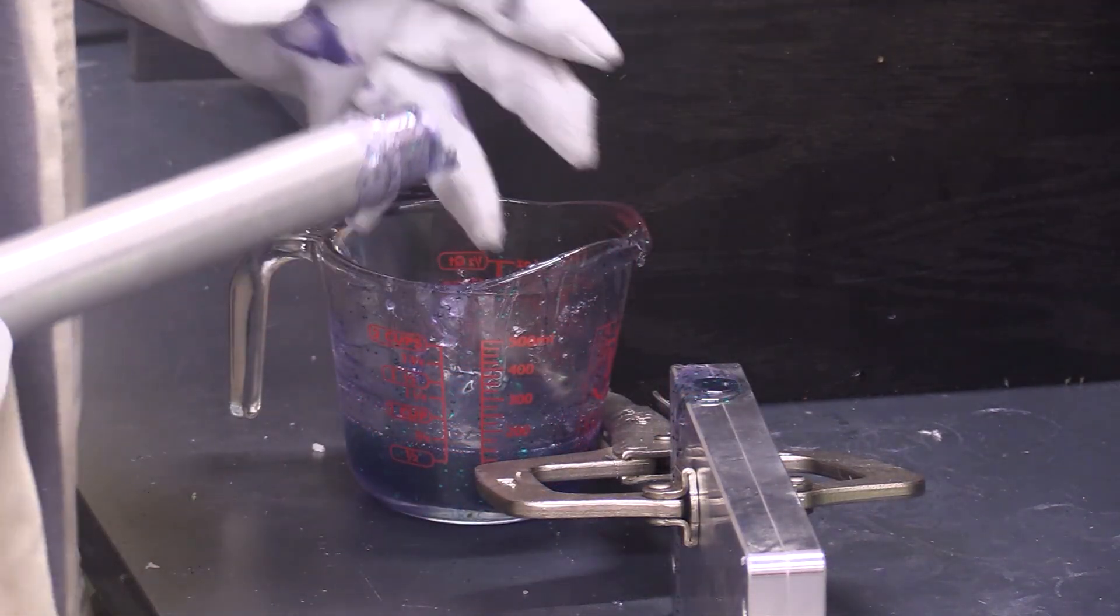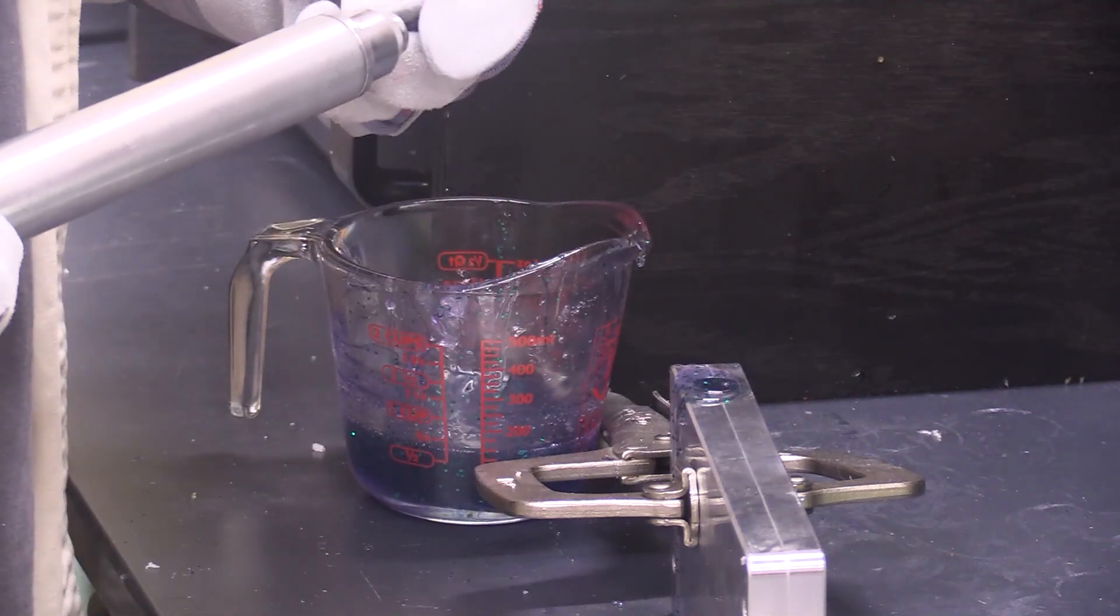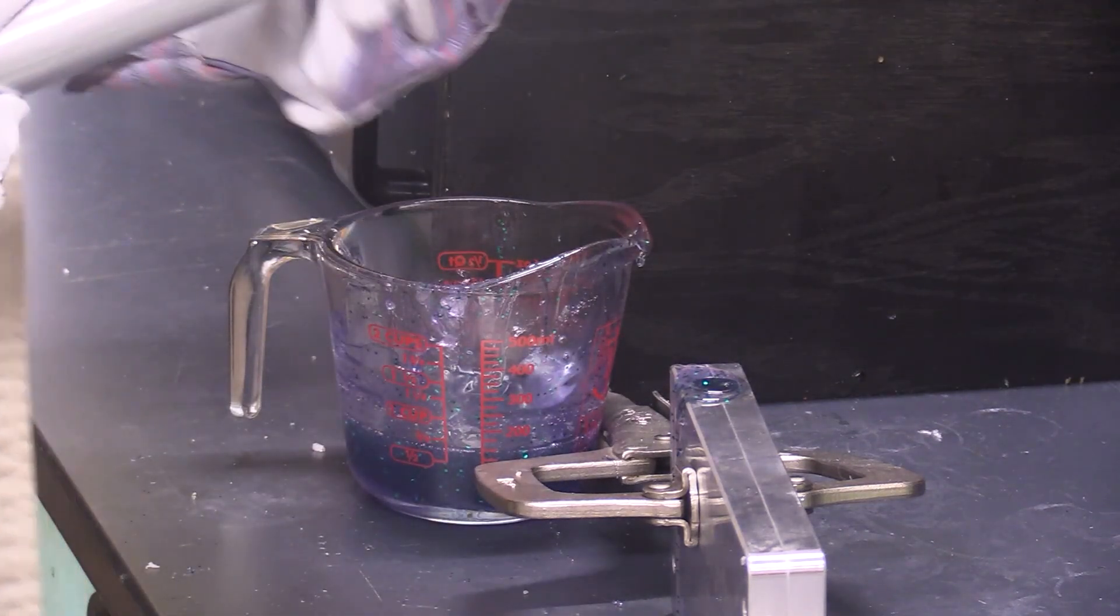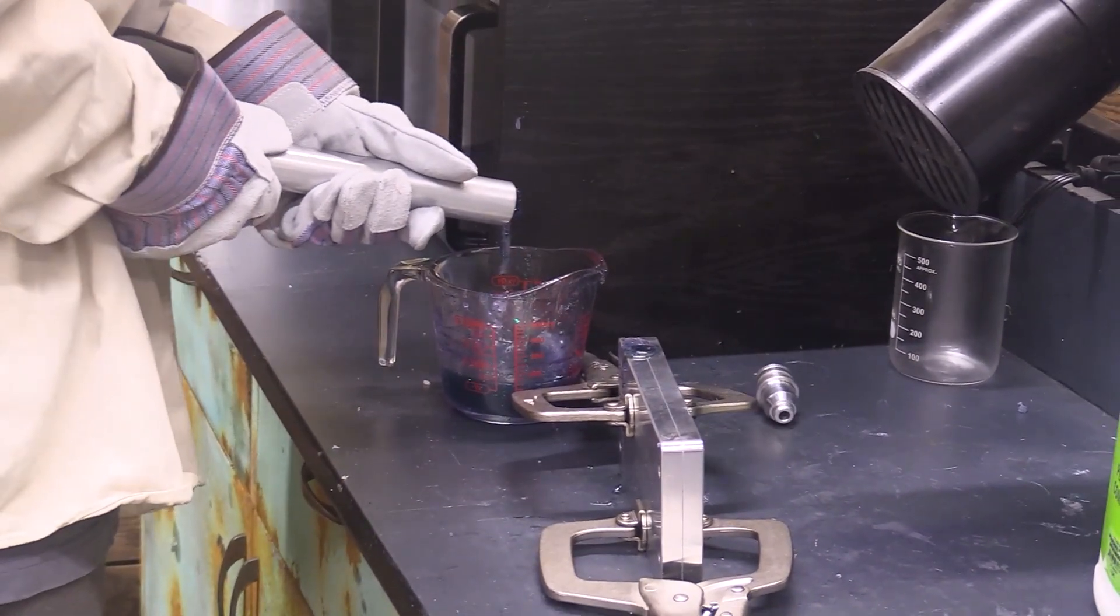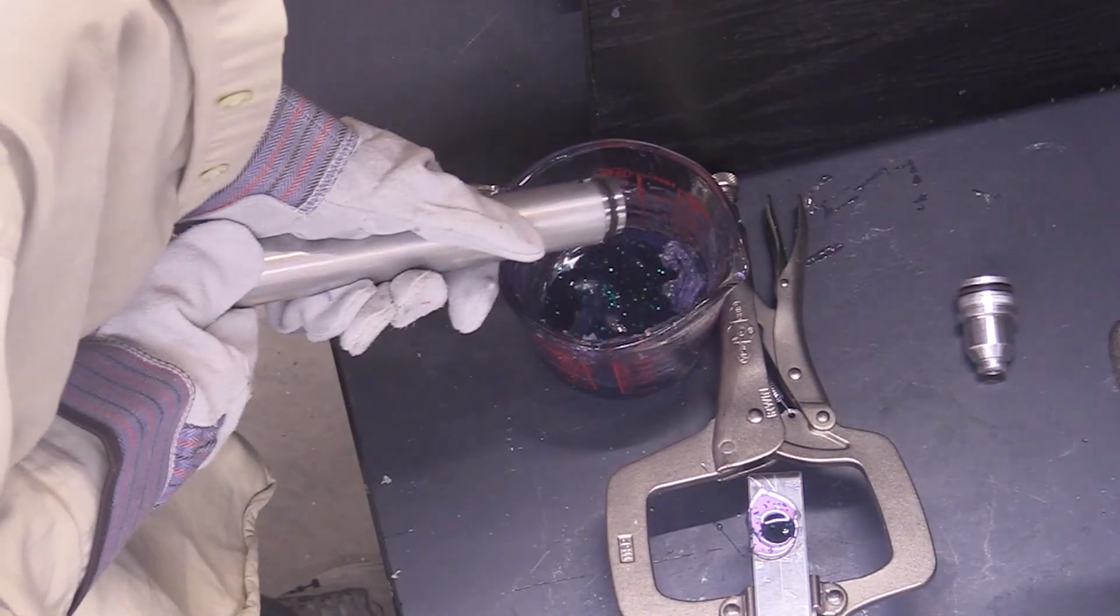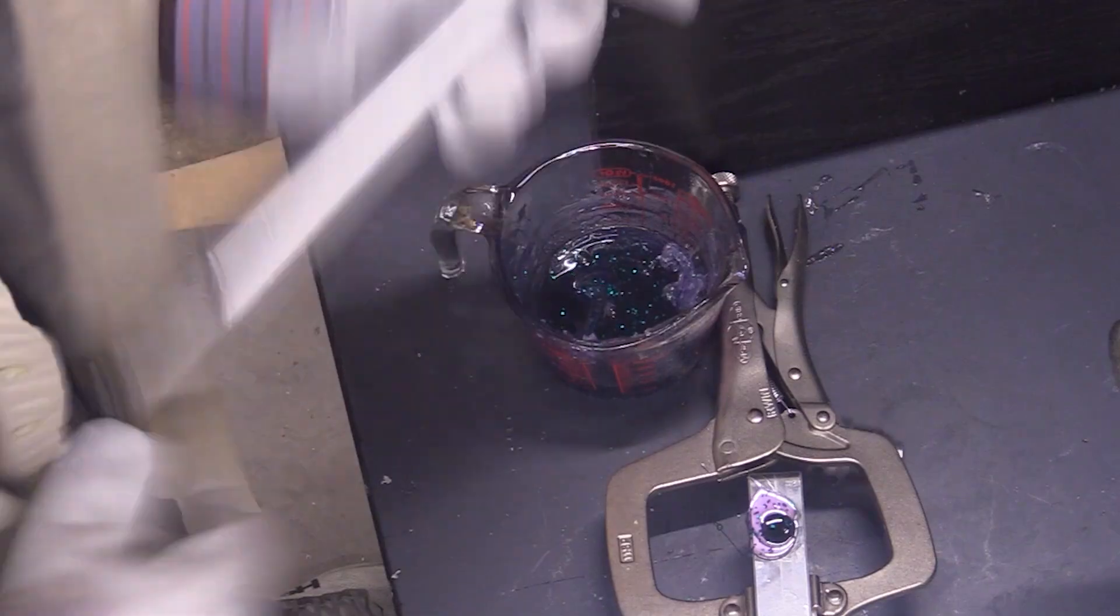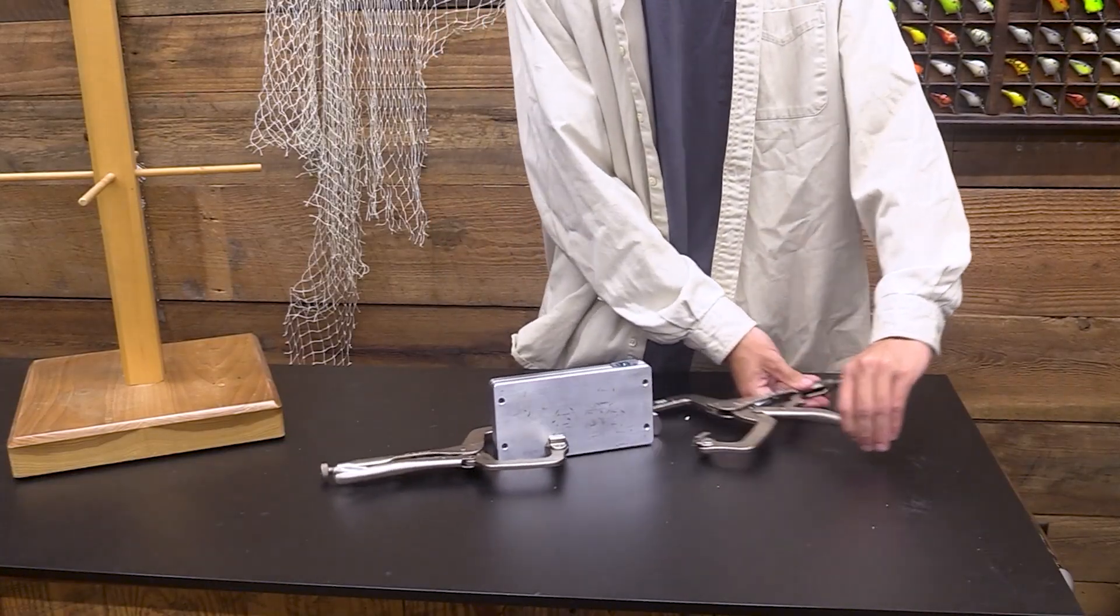Now it'll take your bait about two or three minutes to fully harden. What we're going to do is clean out our injector. All this plastic that's still left in here you can reuse, melt again and use for another bait. After about two or three minutes your bait should be done.